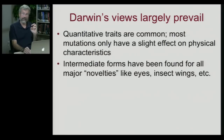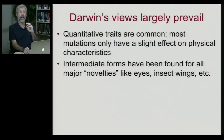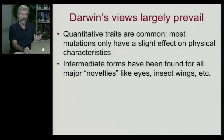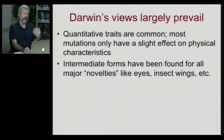Unlike the rather bizarre claims of the creationists, there have indeed been a lot of intermediate forms found in the fossil record. And we do have, even amongst living organisms, intermediate forms from major evolutionary novelties like eyes, as we saw in the mollusks, and insect wings, where we saw the gill flaps and the stoneflies.